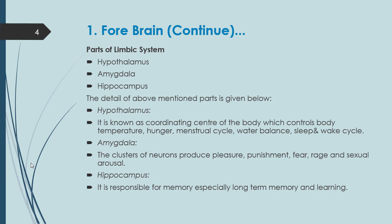Number one: hypothalamus. It is known as the coordinating center of the body. It controls body temperature, hunger, menstrual cycles, water balance, and the sleep-wake cycle. All of these functions are controlled by the hypothalamus.